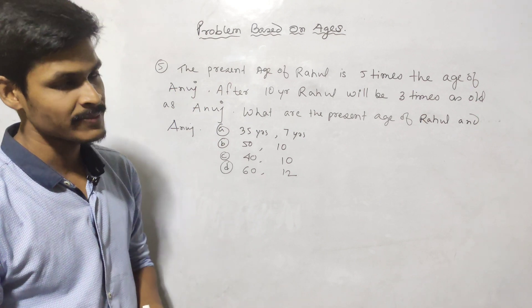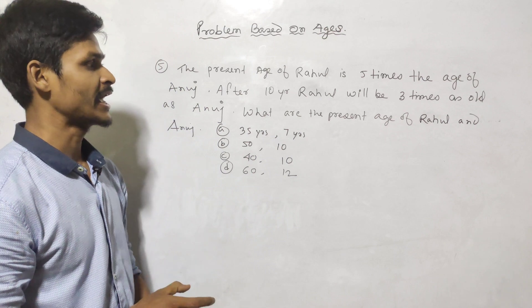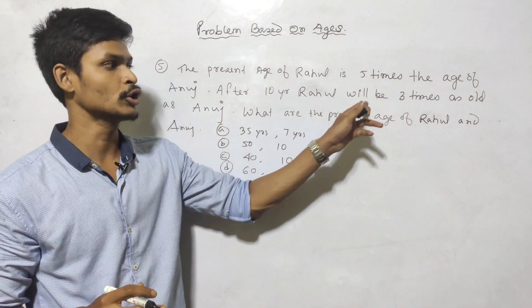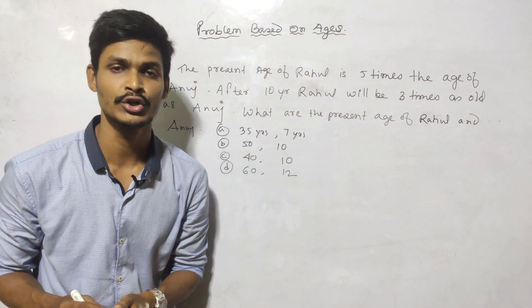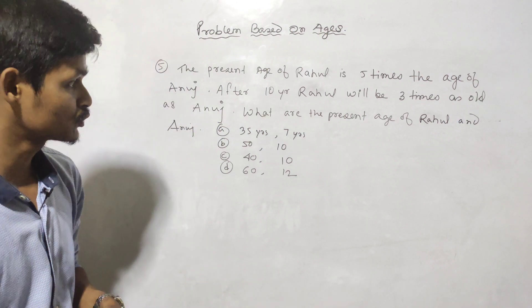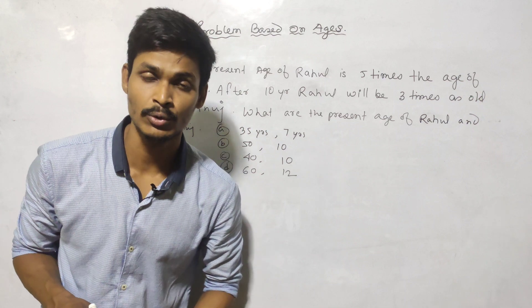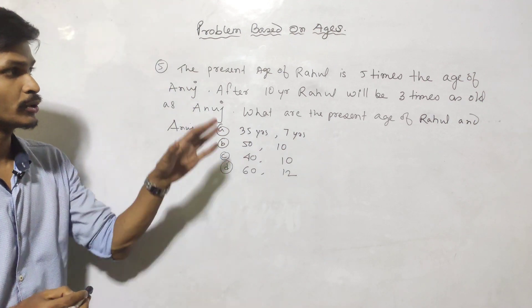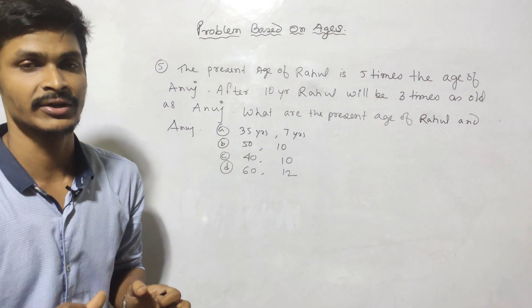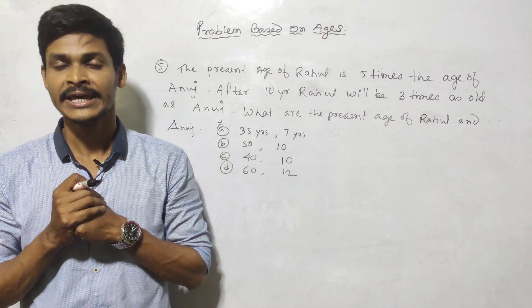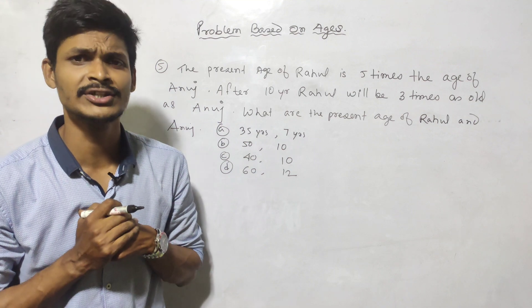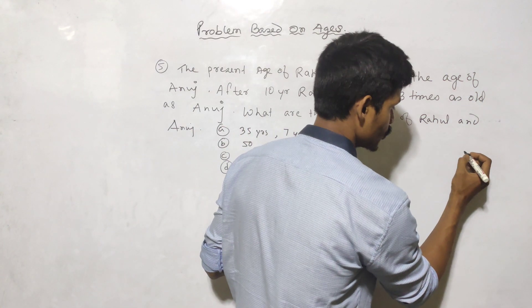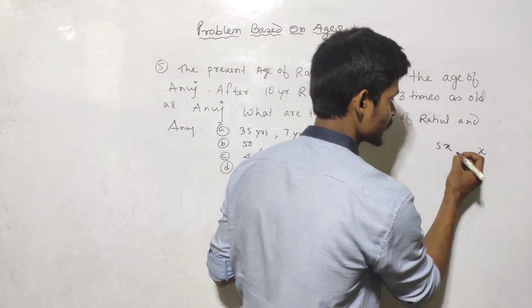The present age of Rahul is 5 times the age of Anuj. After 10 years, Rahul's age will be 3 times. So the ratio of Rahul to Anuj is 5 to 1.